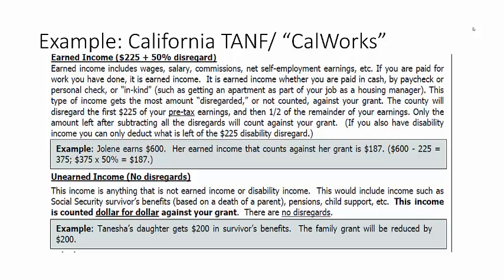every additional dollar earned results in a TANF benefit reduction of 50 cents. In this example, an individual earning $600 a month would have her benefit reduced by 0.5 times 600 minus 225, or roughly $187. Thus, rather than receiving the maximum benefit of $714 a month, such an individual would receive 714 minus 187, or approximately $527 a month. You may want to pause here and make sure you understand, using this example, how the earnings disregard and earnings reduction works.